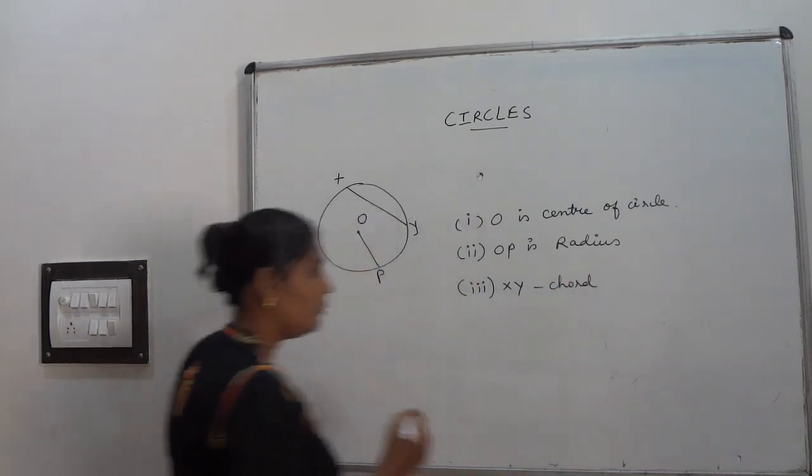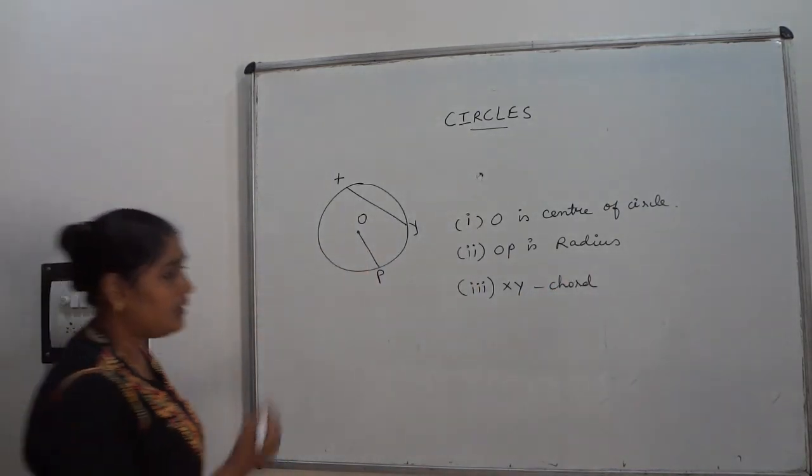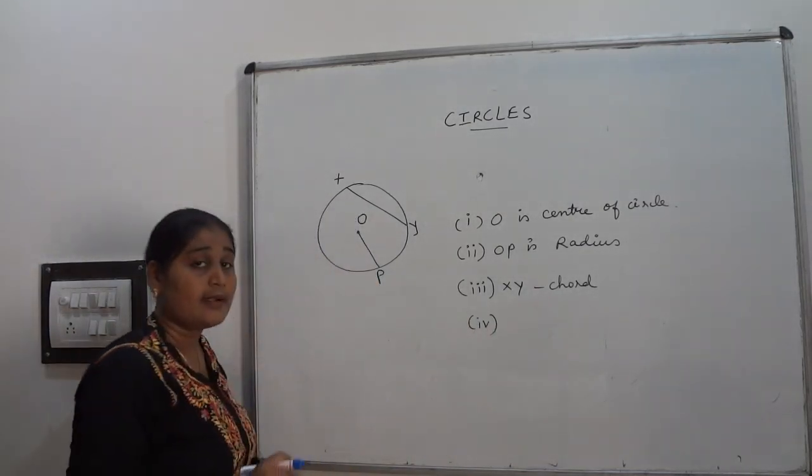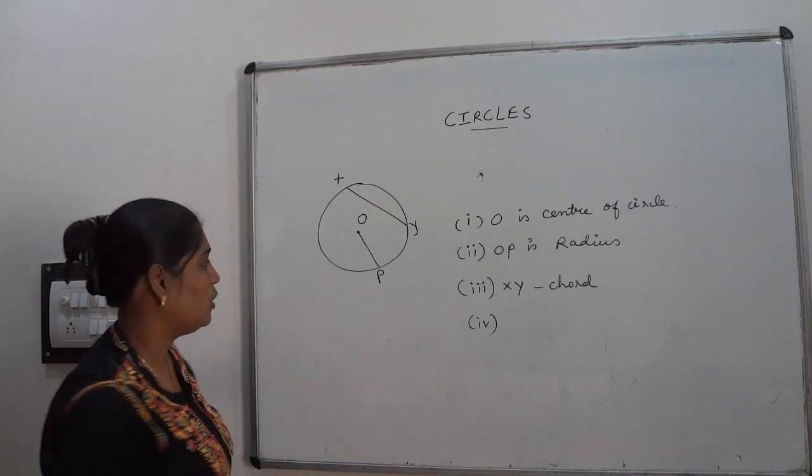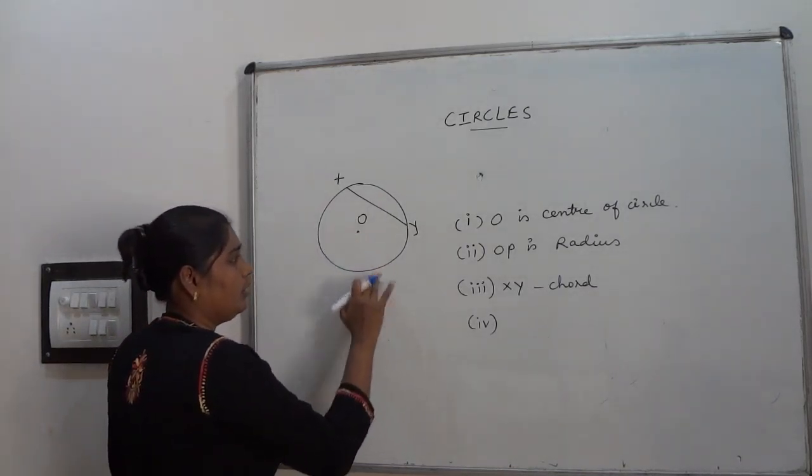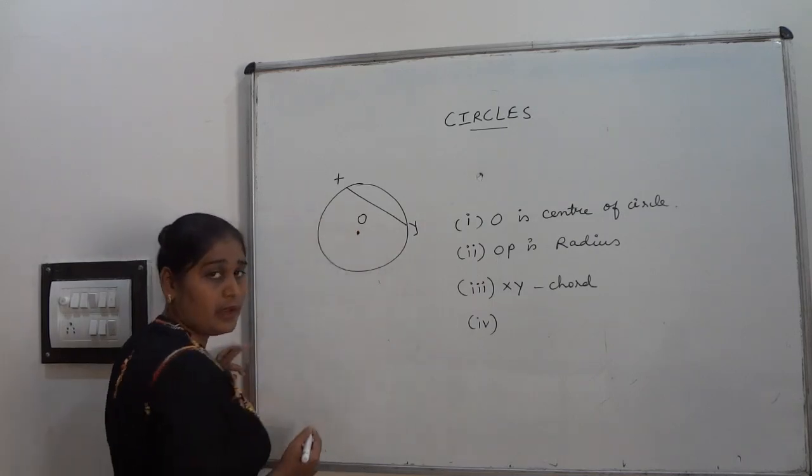Chord of the circle. And in 10th standard, two more things we are going to discuss. That is tangent and a point of contact. What is tangent? Look here now. In the same figure I am going to explain.